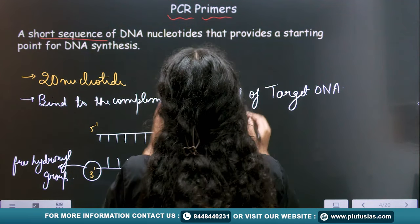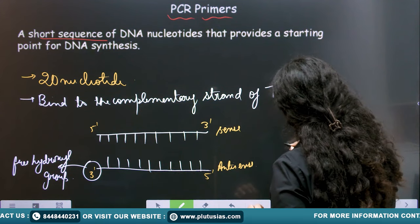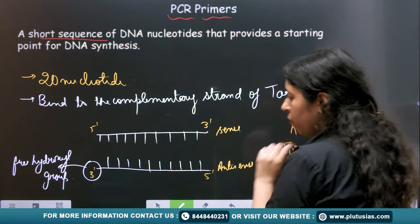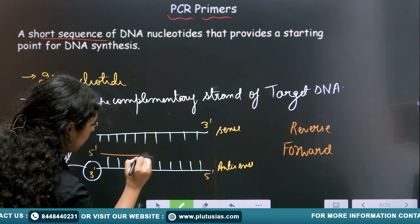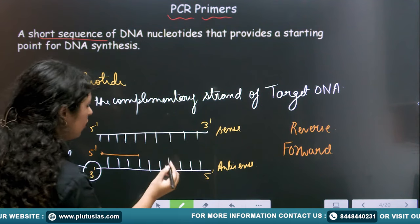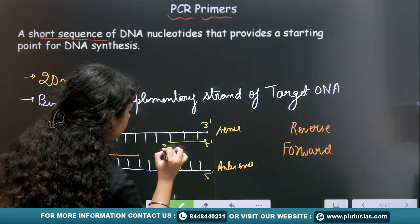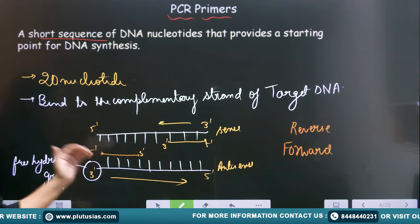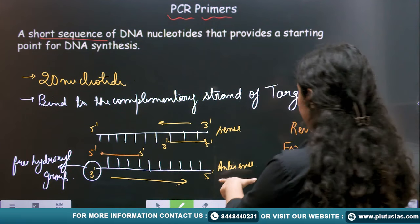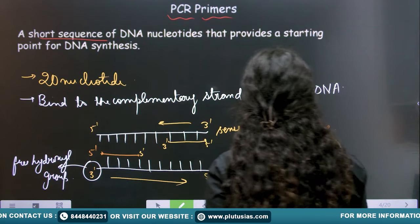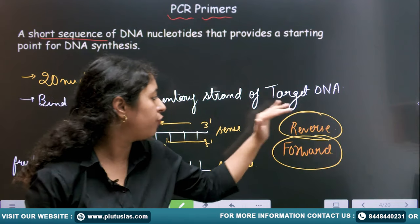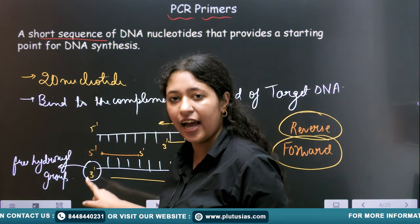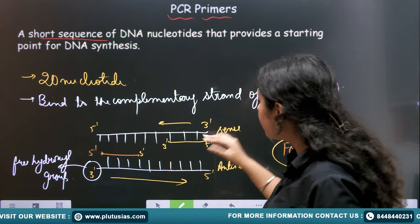The two types of primers are: the forward primer and the reverse primer. One primer will bind on the antisense strand — this primer is going in the forward direction and is known as the forward primer. The other primer will bind on the sense strand and moves in the reverse direction — it is known as the reverse primer. We have to synthesize both the strands, so on the antisense strand the forward primer will work, and on the sense strand the reverse primer will work.